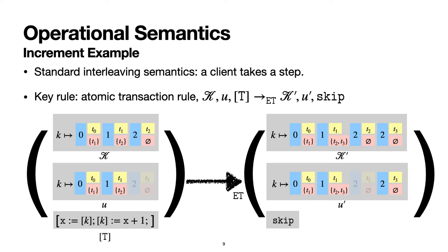We propose a standard interleaving semantics, parameterized by a notion of execution test ET, which checks if a client is allowed to commit a transaction. The notion of client view helps us reduce a transaction to one abstract step instead of several small steps with fine-grained interleaving. The key rule in our semantics is the atomic transaction rule, which describes how a client commits a transaction.